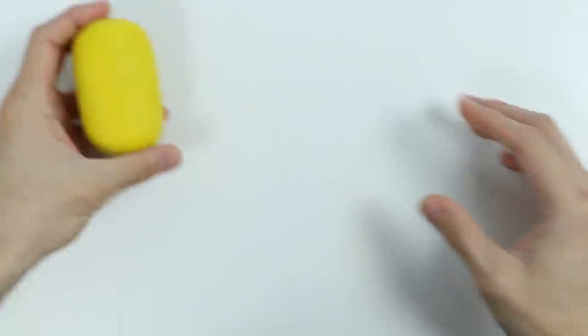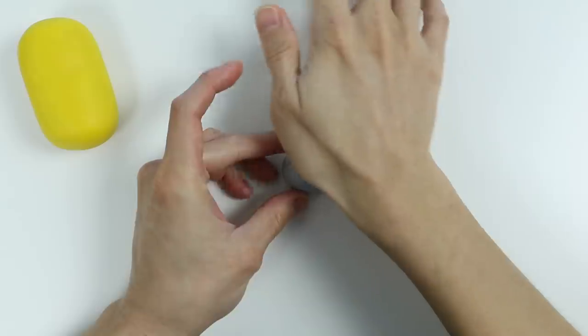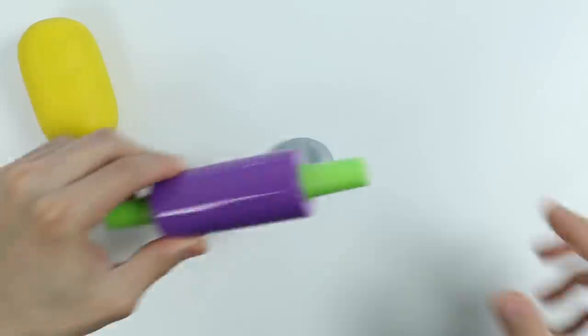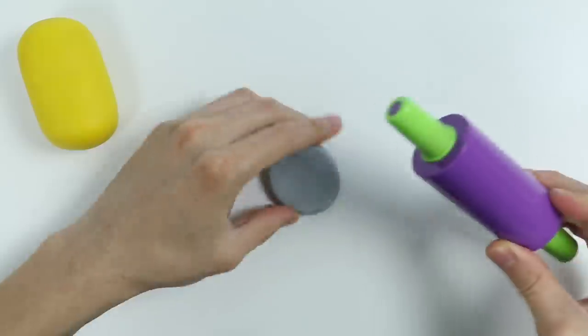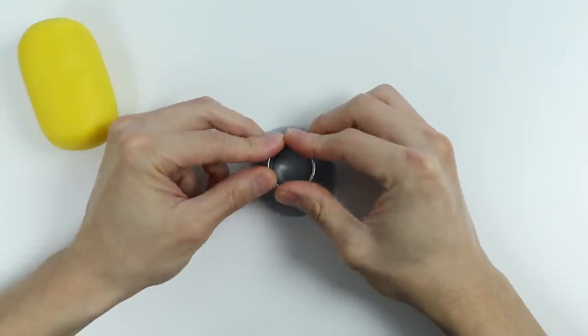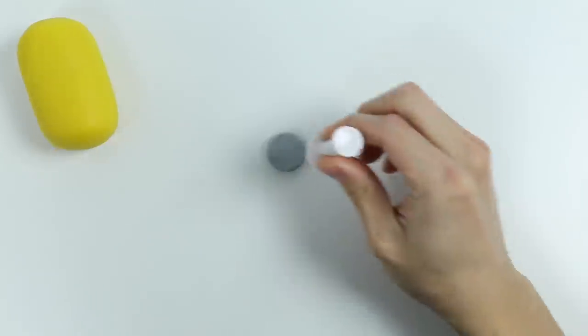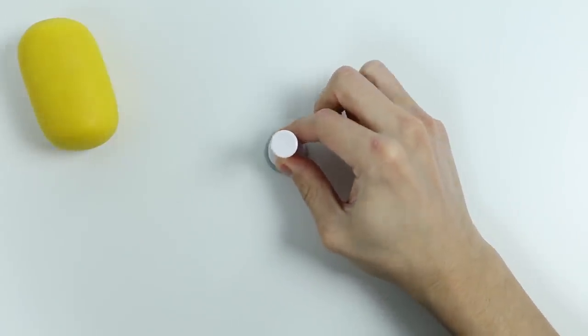Now let's put that to the side and grab some gray Play-Doh. Let's roll this out. Now let's use a circle cutter. Now let's stamp out the center because we only need the outer ring.